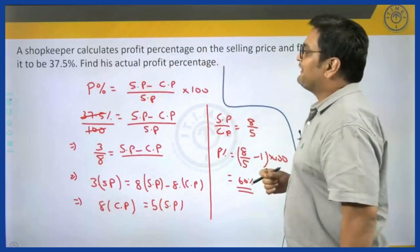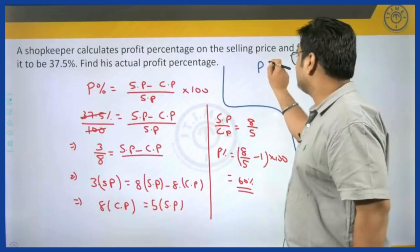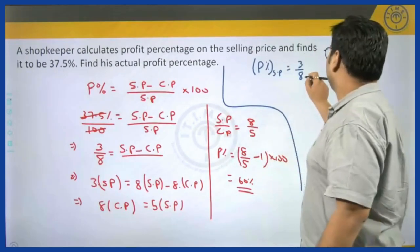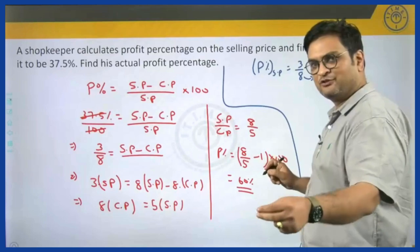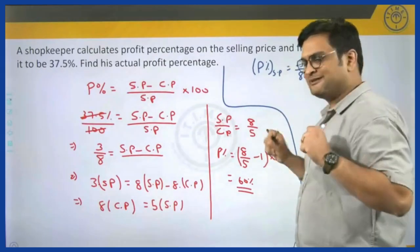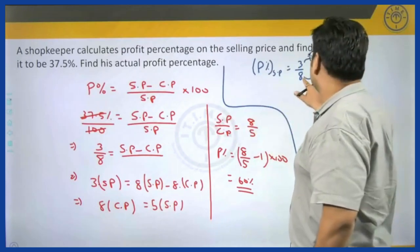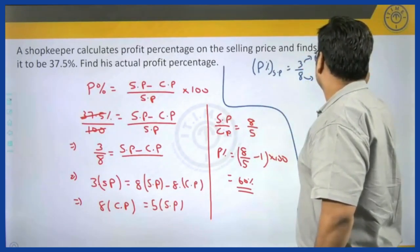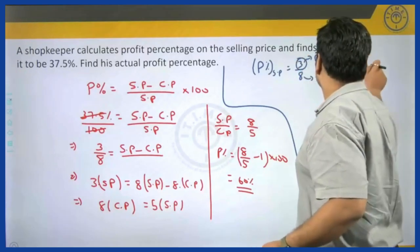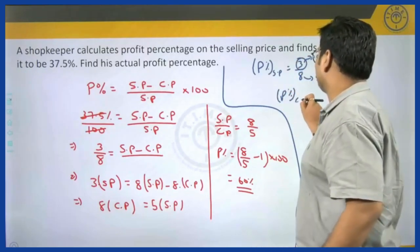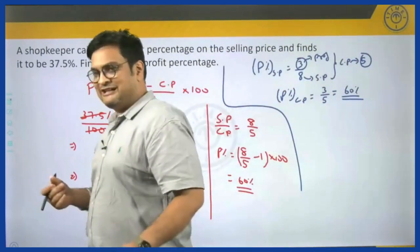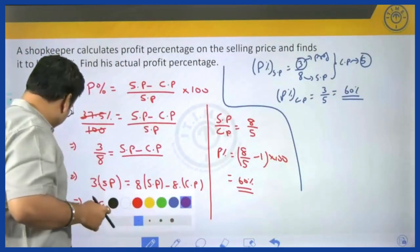Observe the faster approach: 37.5 percent means 3 by 8. So profit percentage when calculated on SP is 3 by 8. This means if your SP is 8 units, profit is going to be 3. In any transaction, if SP is 8 and profit is 3, then cost price is 8 minus 3 equals 5. Now if profit is 3 and cost price is 5, profit percentage on cost price is 3 by 5, which is 60 percent. We can get to the same answer in less than half the time.